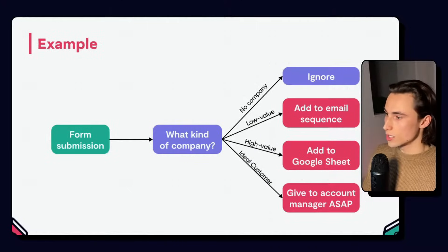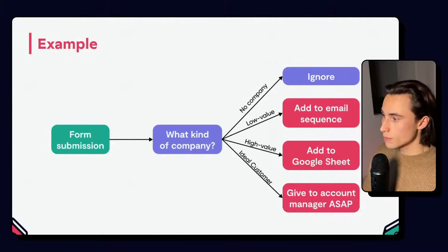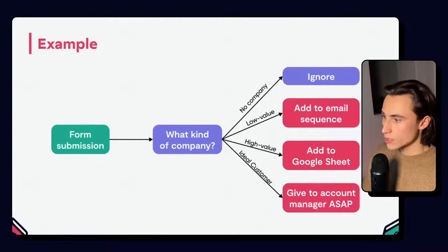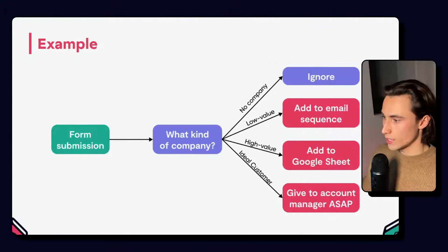Here, we can see an example of a workflow. We have a form submission. When the form is submitted, we check what kind of company is submitting the form. If we cannot find a company, we ignore. If it's a low value company, we can add the person submitting the form to an email sequence. If it's a high value company, we can add the information to a Google Sheet. And if it's an ideal customer, then we can give this information to an account manager ASAP.